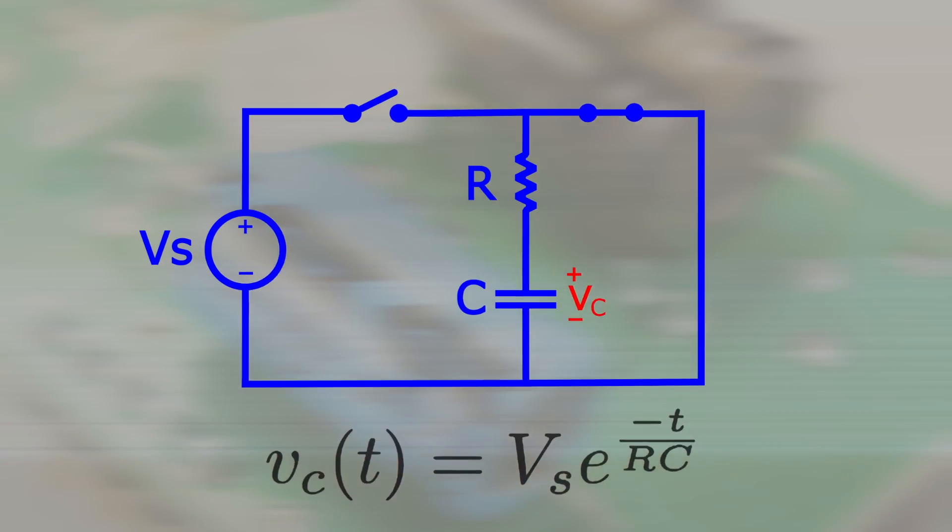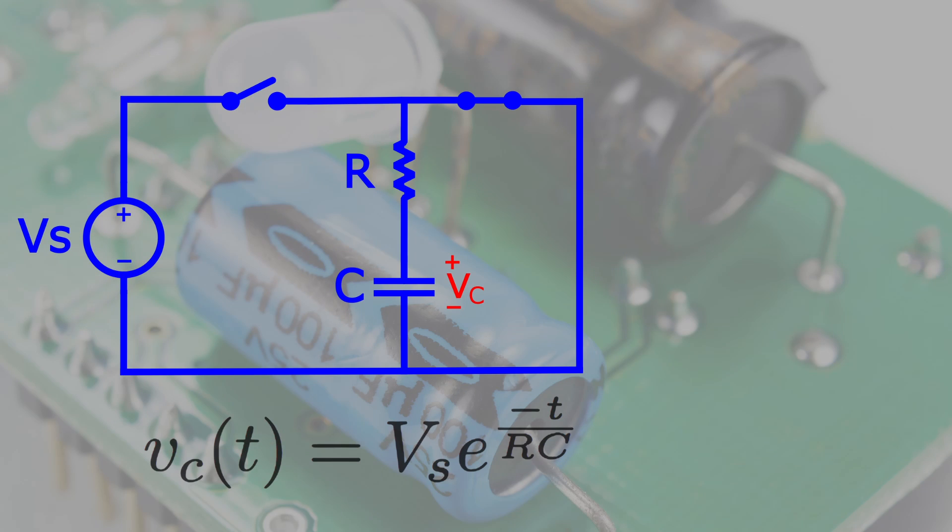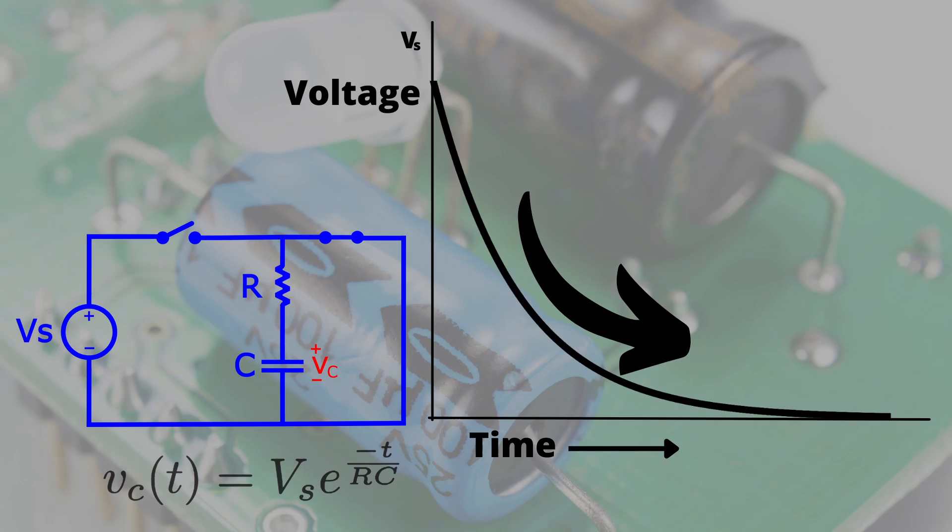And the equation describing the way the capacitor discharges looks like this, which means the way voltage changes over time will look like this. And in this video, we're going to figure out where this equation comes from.